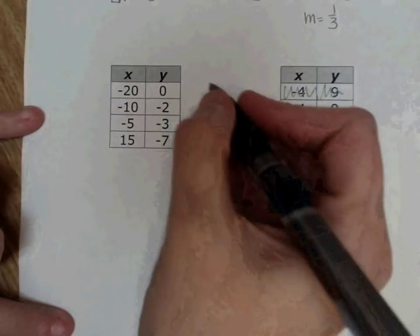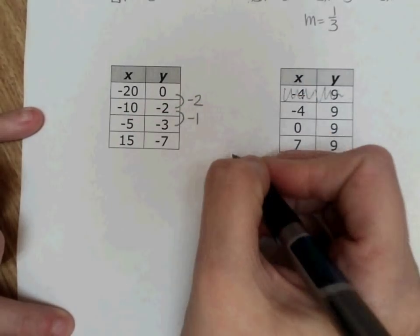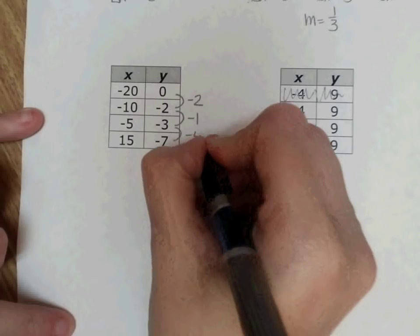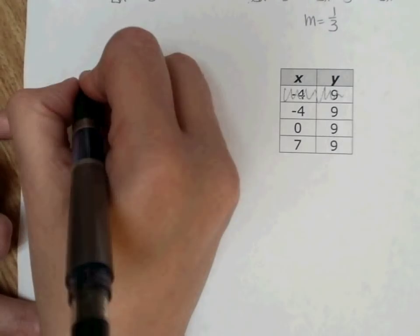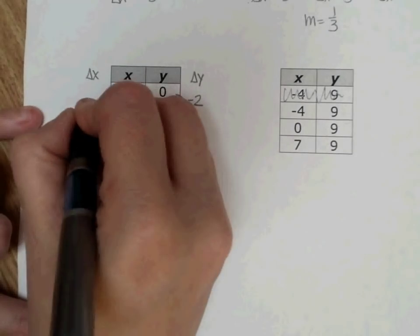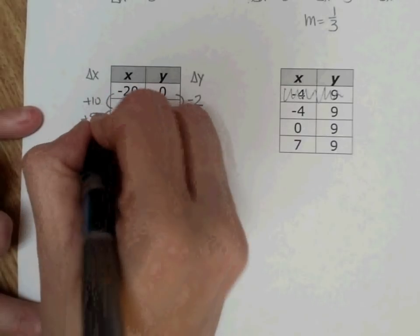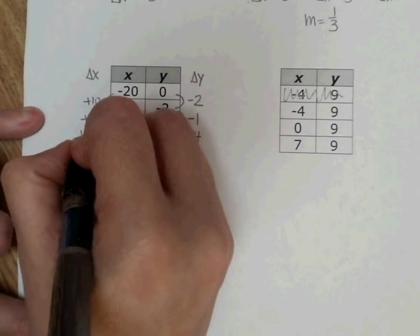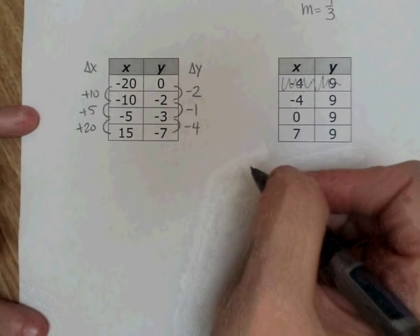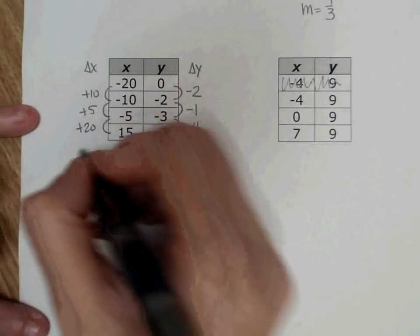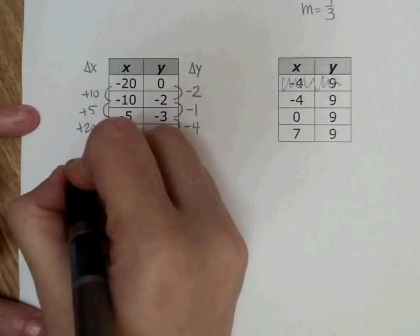Let's look at this one down here. 0 minus 2 is 2. 2 minus 1 is, I'm sorry, negative 3. Negative 3 minus 4 is negative 7. Oh my gosh, they're all different. All of my delta y's are different here. Let's look at my delta x's. Negative 20 plus 10 is negative 10. Negative 10 plus 5 is negative 5. Negative 5 plus 20 is negative 15. So all my delta x's and all my delta y's are different. But again, I'm not worried about the delta y and the delta x. I want to know how they are related to each other.